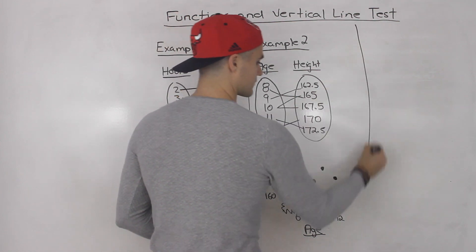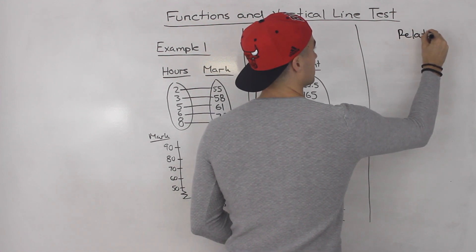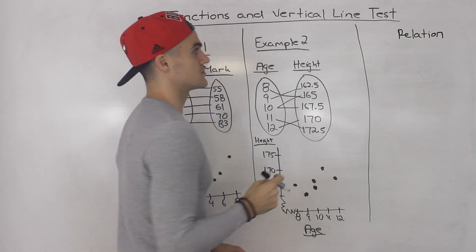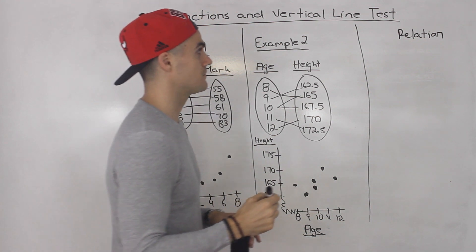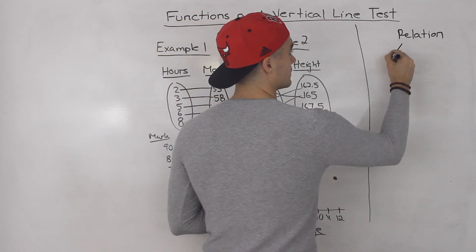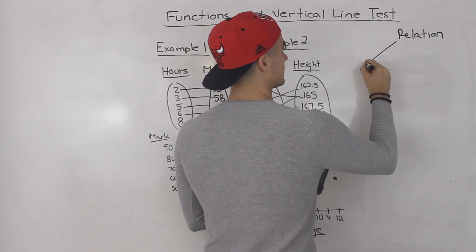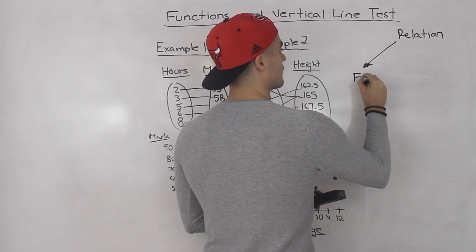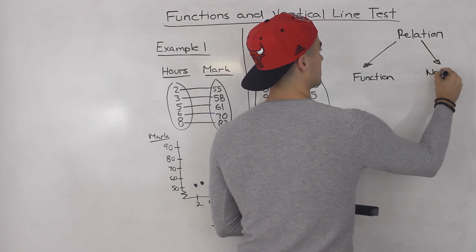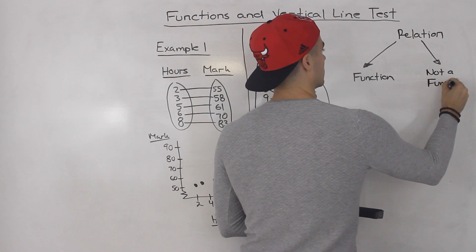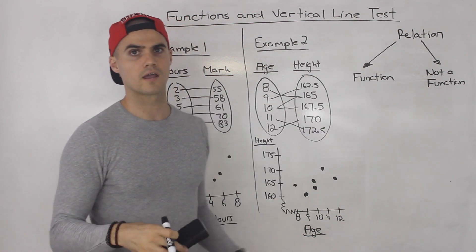So to start off, what is a function? In the previous video we talked about a relation — how it's just a set of x values and y values that are corresponding with each other. Basically, a relation can either be a function or it is not a function. It's always either one of these two — a relation is either a function or it is not a function.